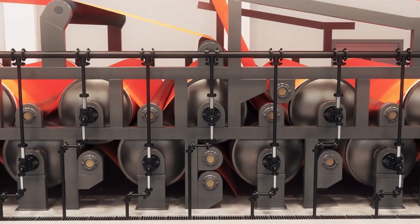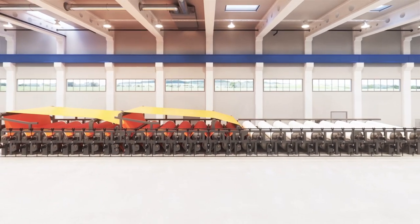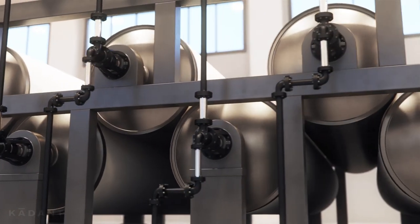The dryer section of a paper machine can contain 50 or more steam-heated dryer cylinders. Moisture in the paper is removed as it passes over each subsequent dryer.